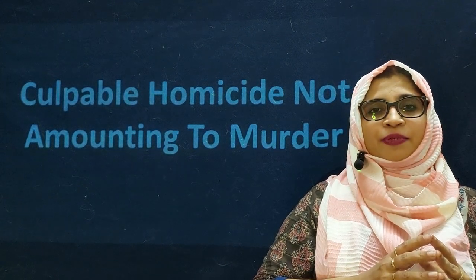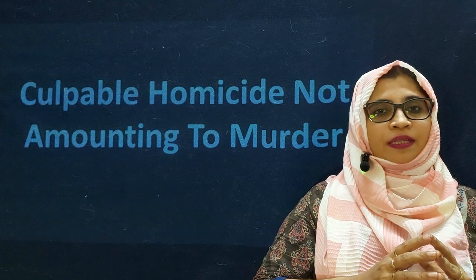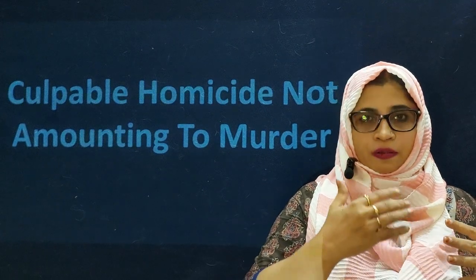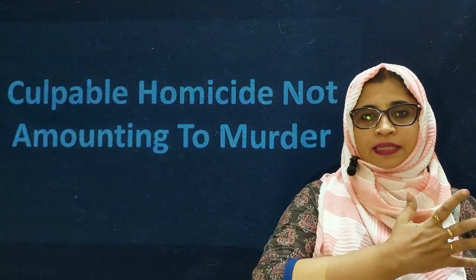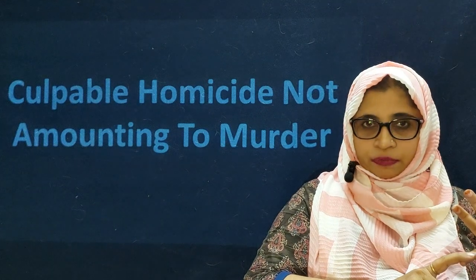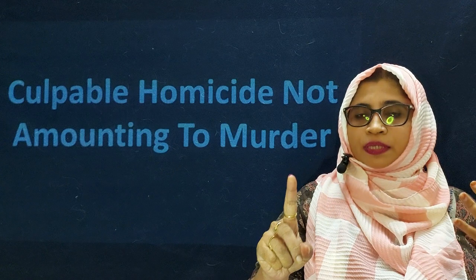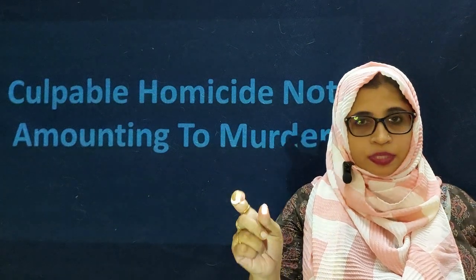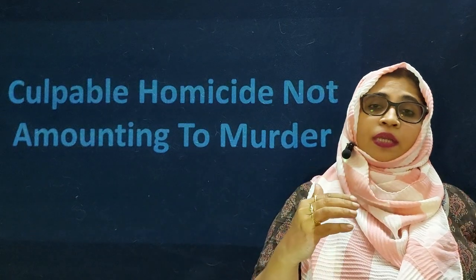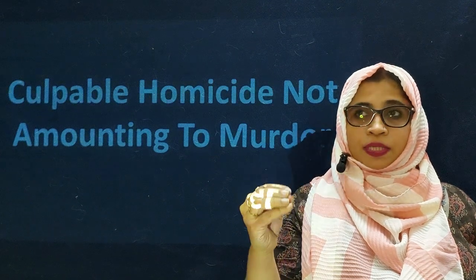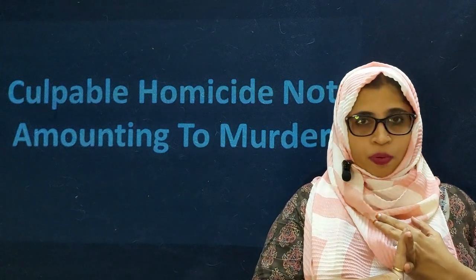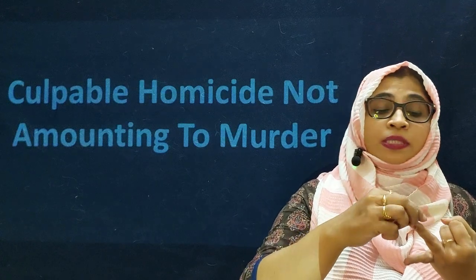Hi everyone, this is Hamida, welcome to Safi Law channel. Today's topic is relating to culpable homicide not amounting to murder. Before discussing this, let me briefly recap the previous class where we discussed Section 299 and Section 300, and the differences between them. Culpable homicide is of two types: culpable homicide amounting to murder, and culpable homicide not amounting to murder.